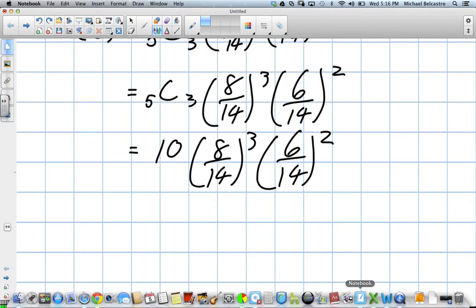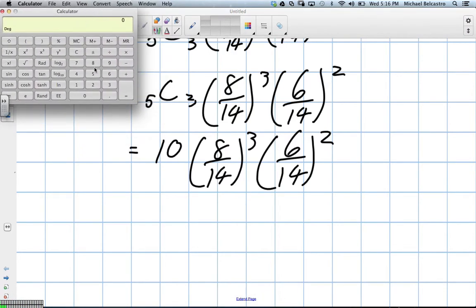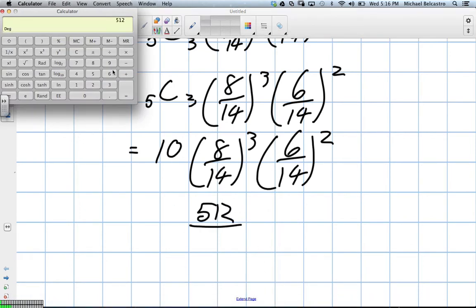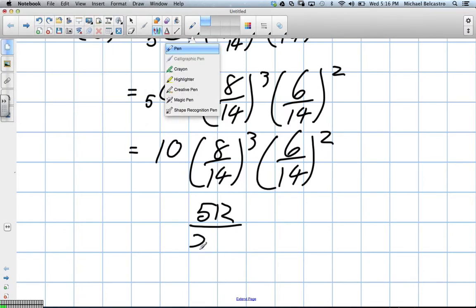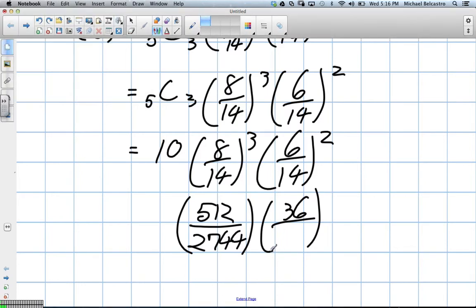I can do it as fractions really quickly. 2,744 over... 36 over 14 squared, which is 196. So these are the fractions you'll have to multiply. I'm sure you can do it in one step on your calculator. What did you end up getting?